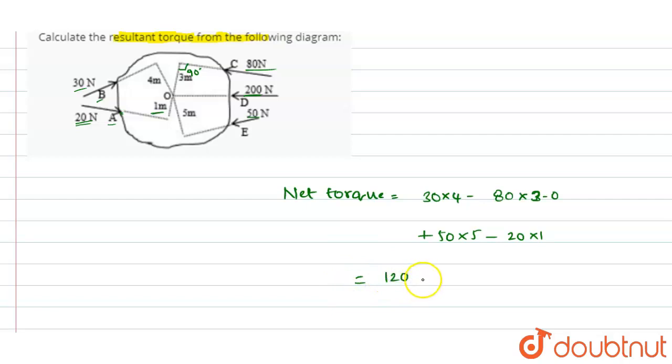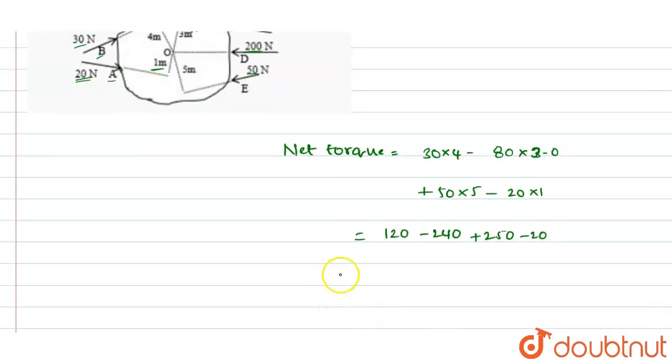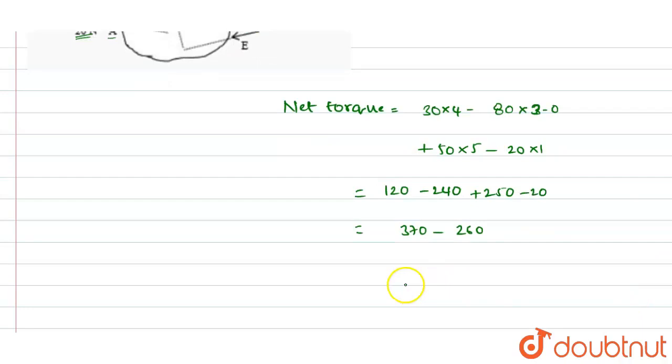So the equation which I will get will be 120 minus 240 plus 250 minus 20. So now I can write this as 370 minus 260. So if you remove 260 from 370, we will be getting 110 as a value. So the net torque, this is the value of the net torque, we have got as 110 newton meter.